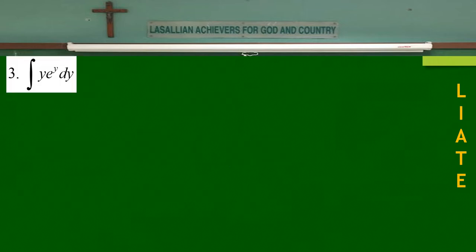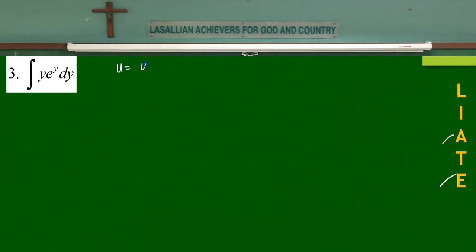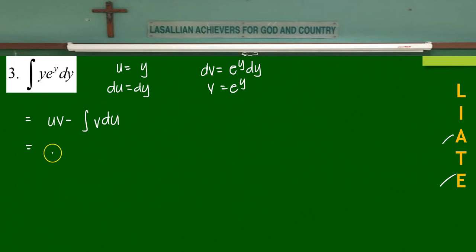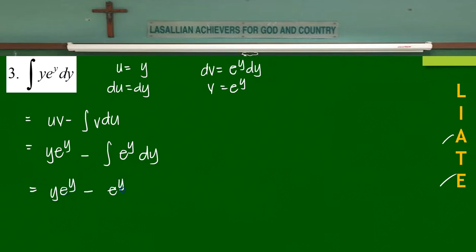For the next example, we have the integral of y·eʸ dy — a combination of algebraic and exponential. Since algebraic comes first in LIATE, let u be y and dv be eʸ dy. Then du is simply dy and v is eʸ. Applying integration by parts gives y·eʸ minus the integral of eʸ dy, which is simply an exponential, giving the final answer y·eʸ minus eʸ plus C.